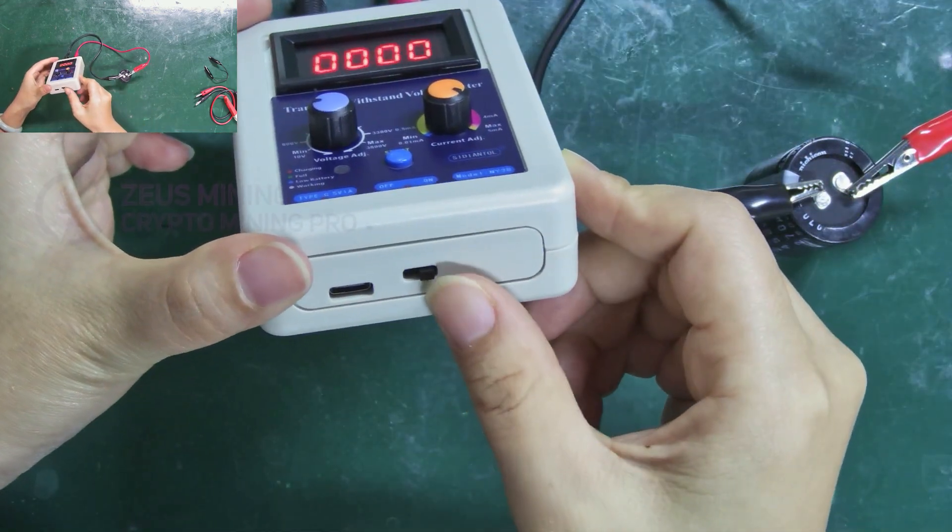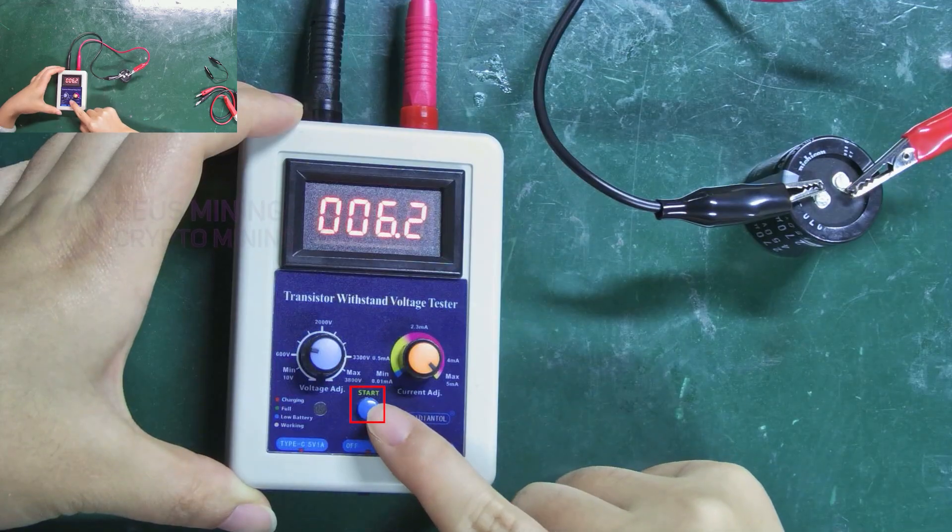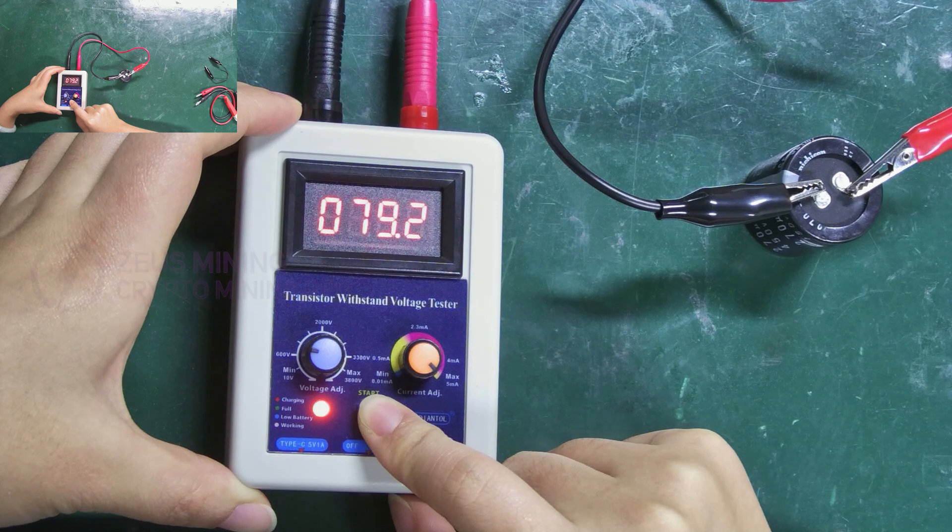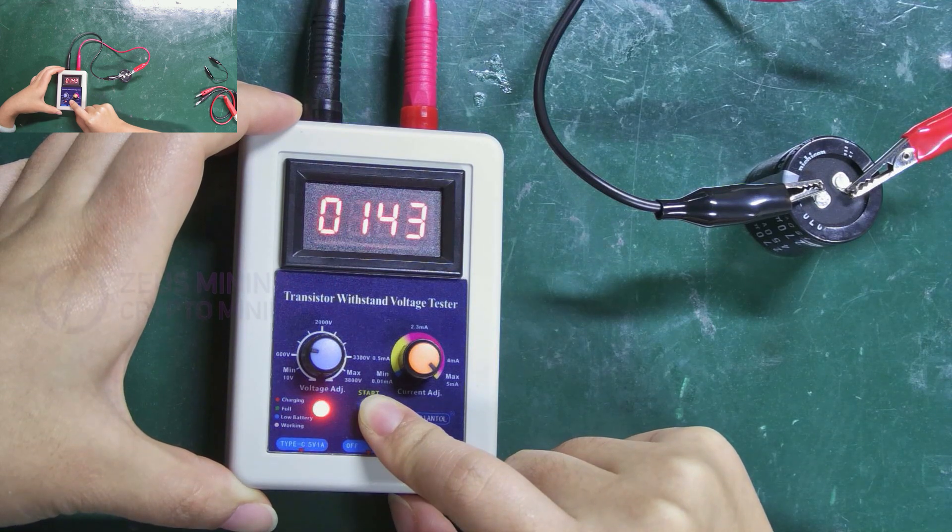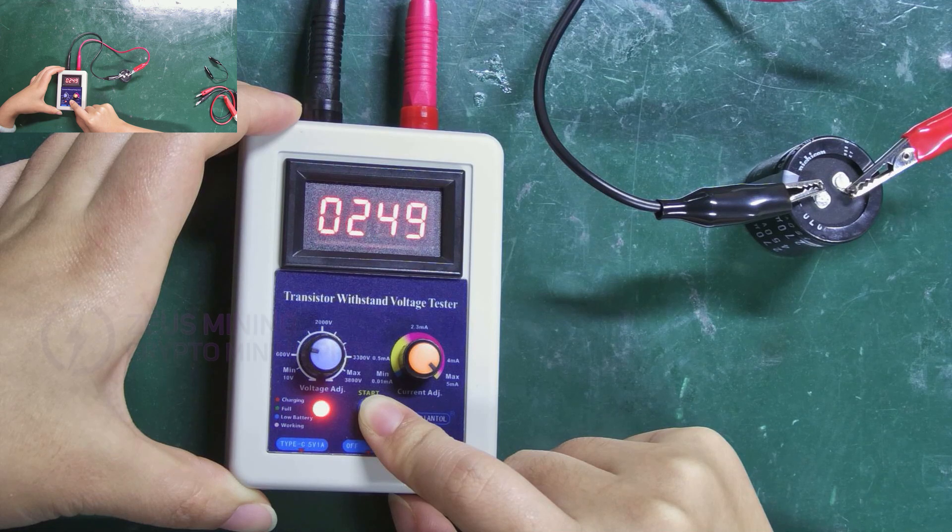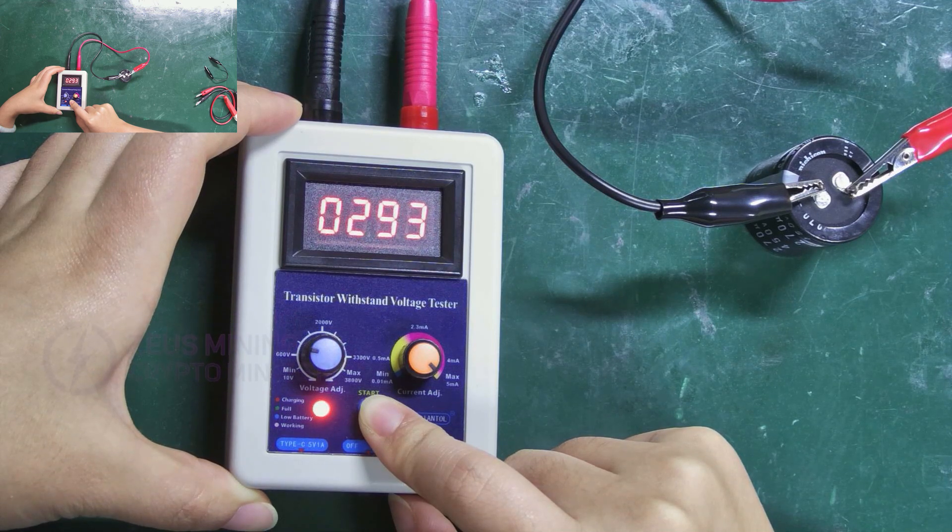Turn on the power switch and press the test button to start measuring. The capacitor will have a charging process, and the voltage will rise quickly until the rising speed slows down or stops, which is its withstand voltage value.